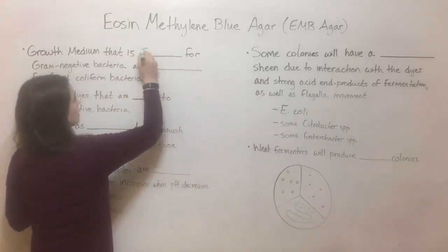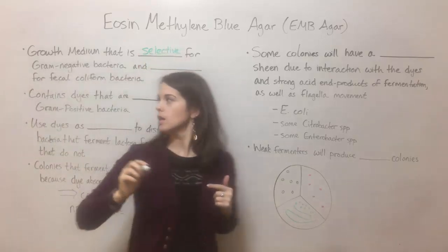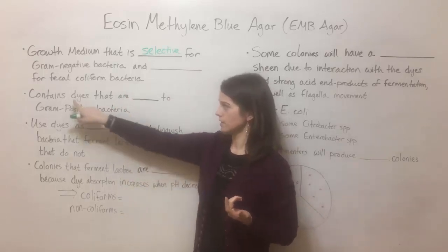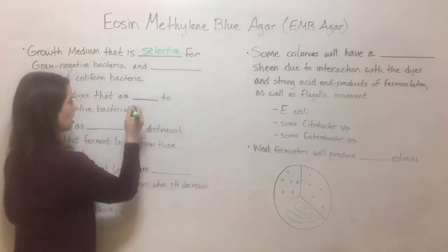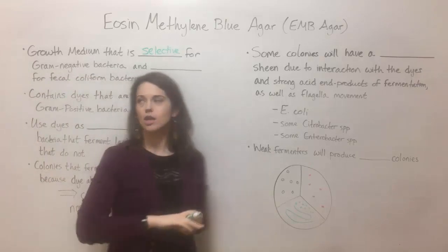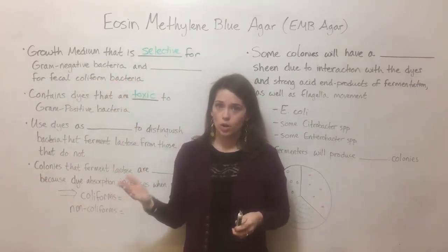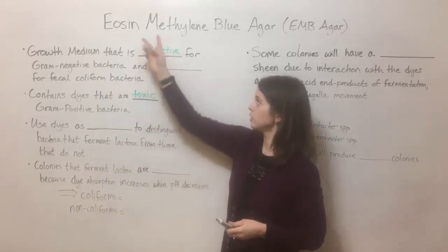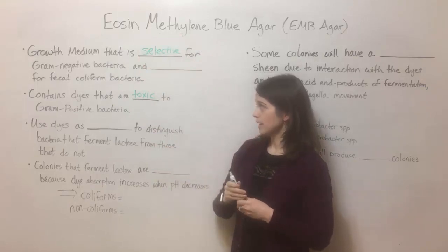EMB agar is selective for gram-negative bacteria. The reason for this is that it contains dyes that are toxic to gram-positive bacteria. It is selective for gram-negative bacteria, meaning it allows them to grow. It contains dyes called eosin and methylene blue — that's where it takes its name — and those are toxic to gram-positive bacteria.